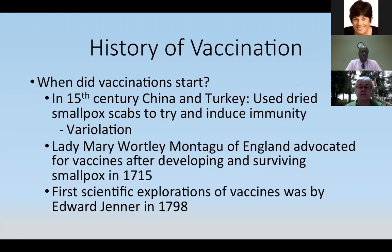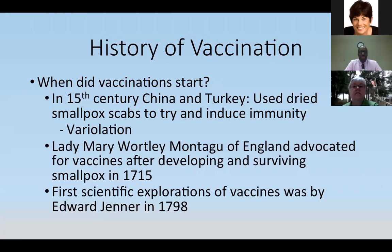When did we start using vaccines and how did they come to be? We can go back to about the 15th century in both China and Turkey, where medicine men started using dried smallpox scabs to try to induce immunity, much like we do today. Smallpox has since been eradicated from this planet. At the time they called it variolation, based on the name of the virus that causes smallpox — variola. In 1715, Lady Mary Wortley Montague of England pushed more for vaccines and vaccinating the population after she developed and survived smallpox.